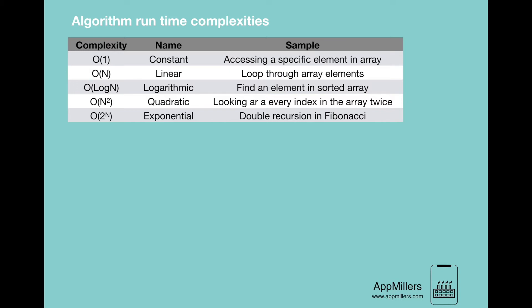In the last video we learned three types of algorithm runtime notations: Big O, Big Omega, and Big Theta. In this video we will look at some examples of algorithm runtime complexities. There are many time complexities in the world of algorithms; here we will look at the most commonly used ones. The first is O(1), also called order of one or constant time complexity.